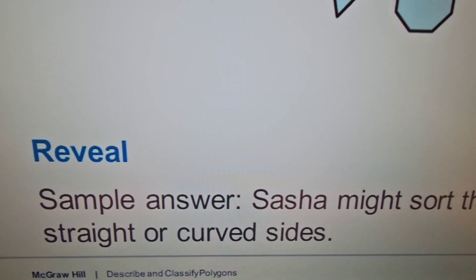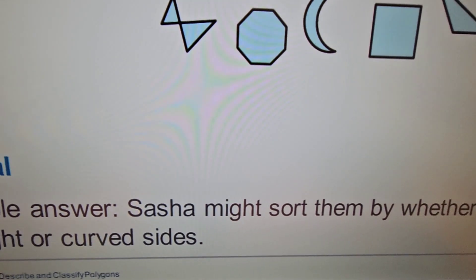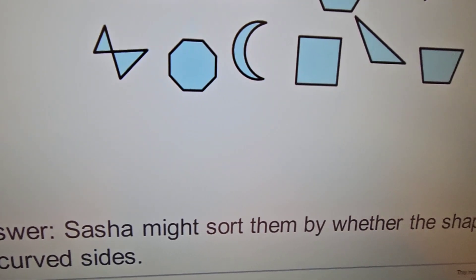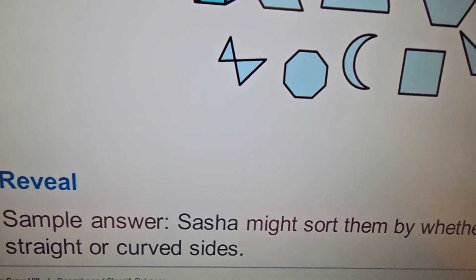So basically, again, telling me about the different attributes. And of course, as you can see, Sasha might sort them by whether the shape has straight lines or curved sides.